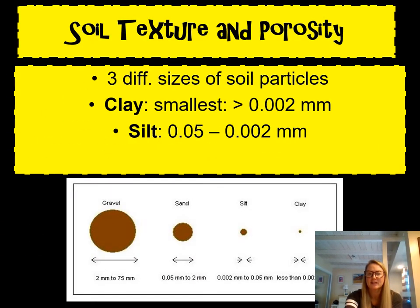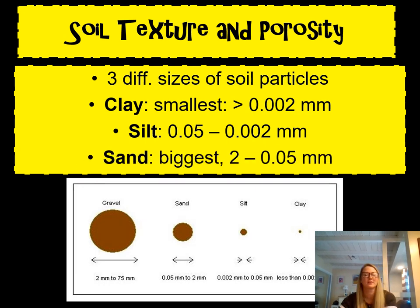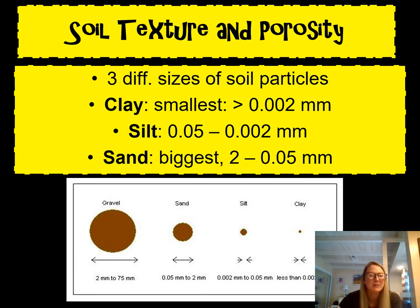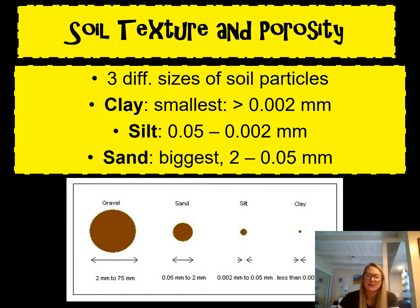We can classify soils based on particle size. There are three types: clays are the smallest, about 0.002 millimeters or smaller in diameter; silts are about 0.002 to 0.05 millimeters in size; and sands are the biggest, ranging from about 0.05 to 2 millimeters in diameter. This is important because particle size plays a great role in how much oxygen or nutrients the soil can hold.